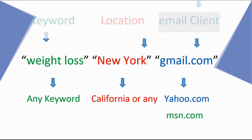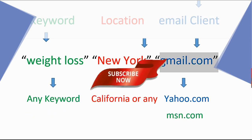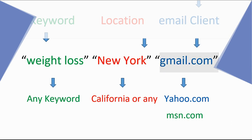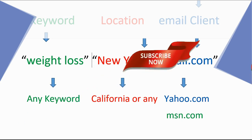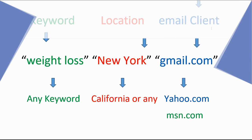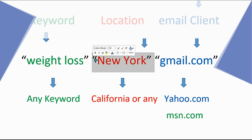I'm using email client as gmail.com. It can be any — if you've collected emails using gmail.com then you can use another one like yahoo.com or amazon.com, and you keep going to get more emails. The search format is: double quote keyword, double quote, space, double quote location, double quote, space, double quote gmail.com, double quote. If you don't want to use a location, then you can delete it and just use 'weight loss' and 'gmail.com' only.